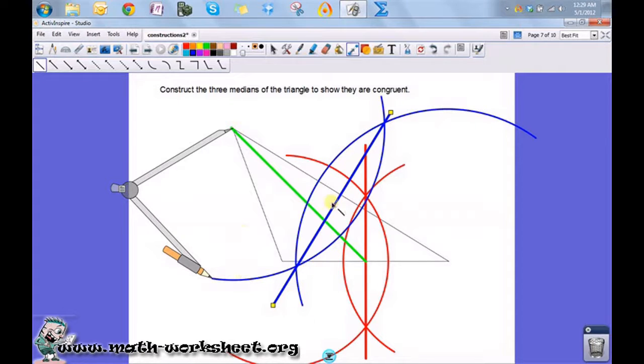This is the midpoint of this side. So, if I draw another line segment from this vertex to that point, that is the next median.